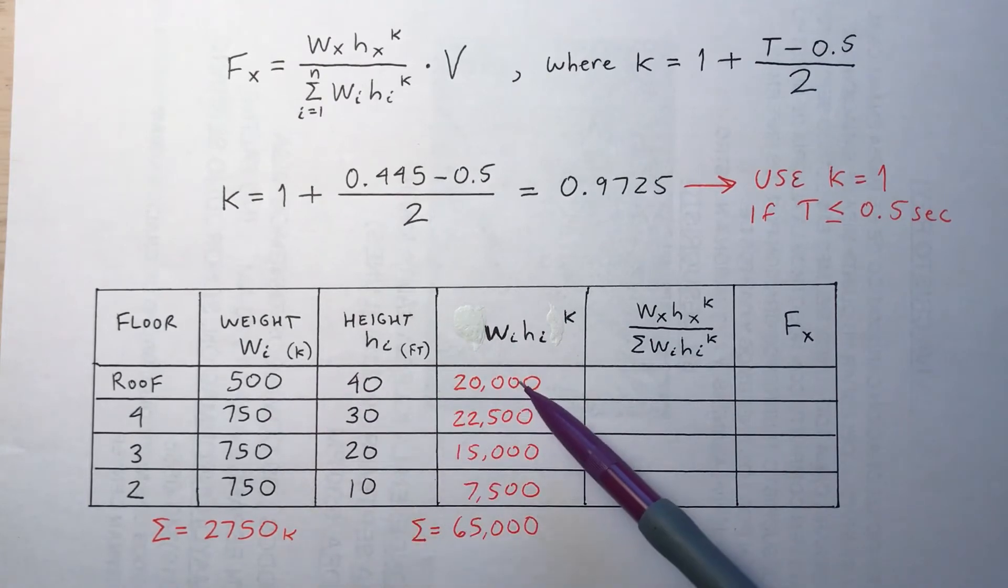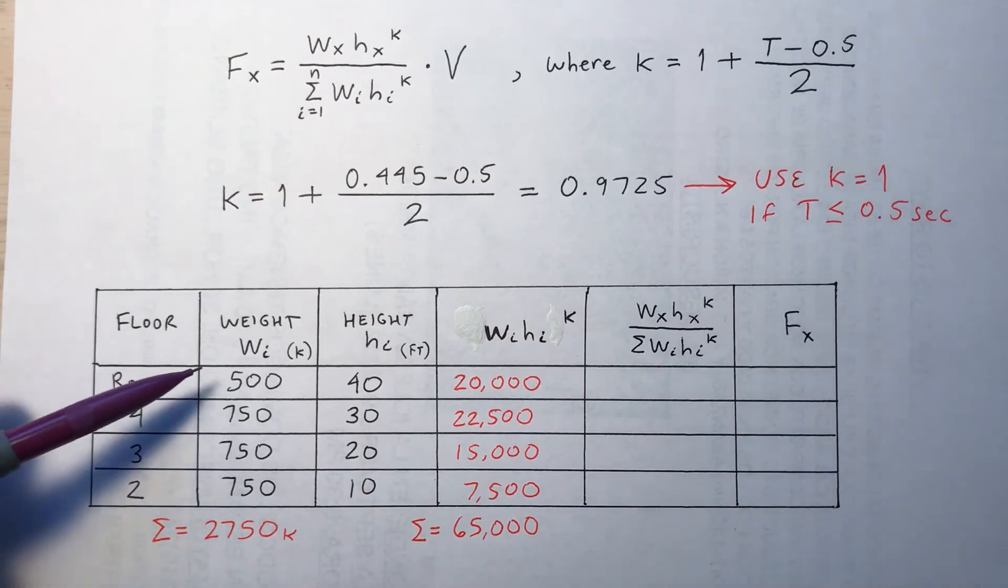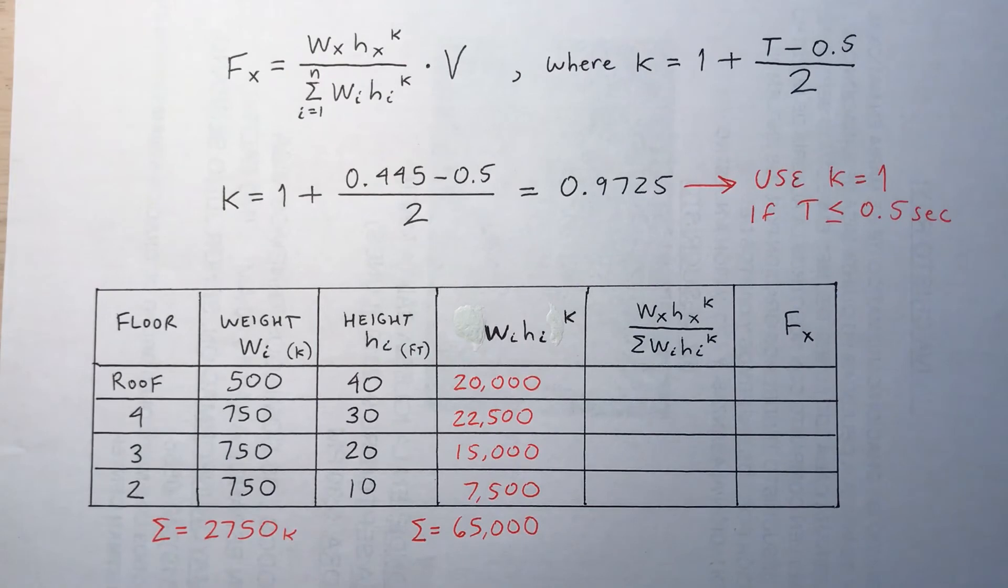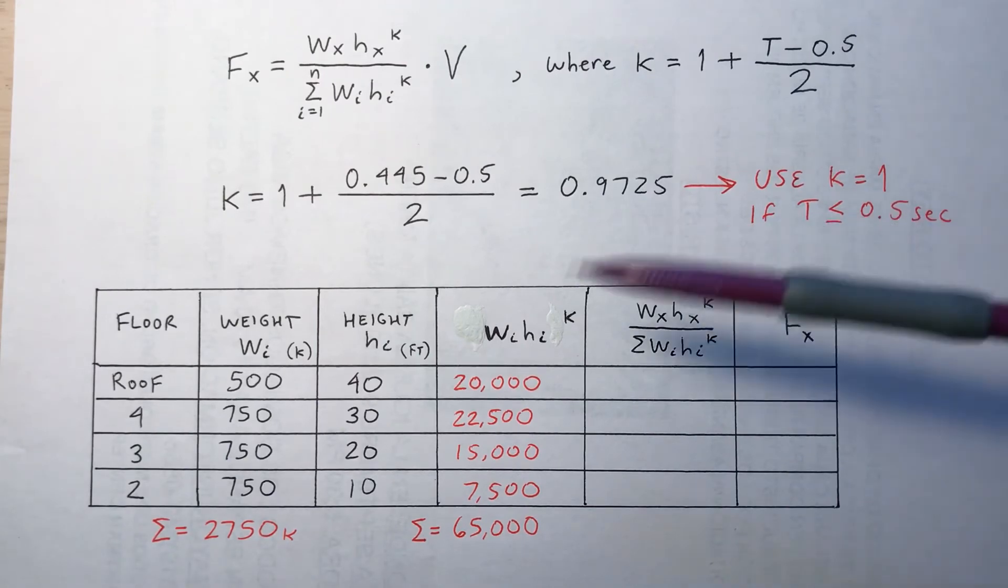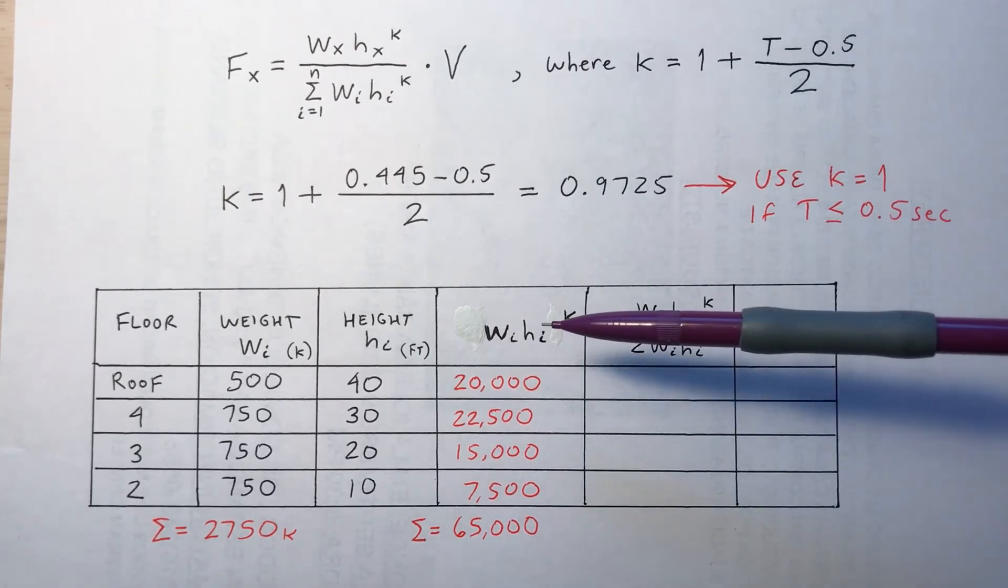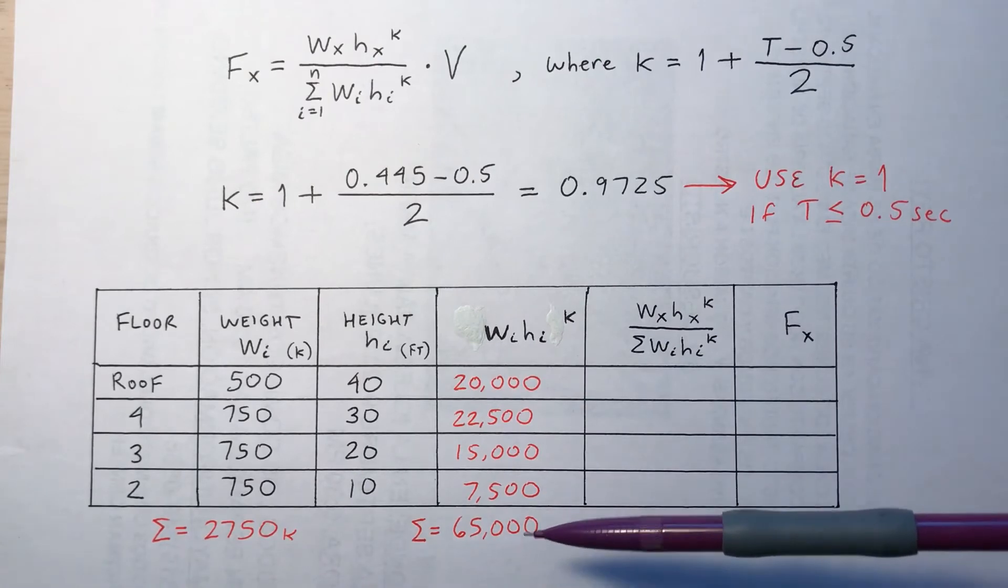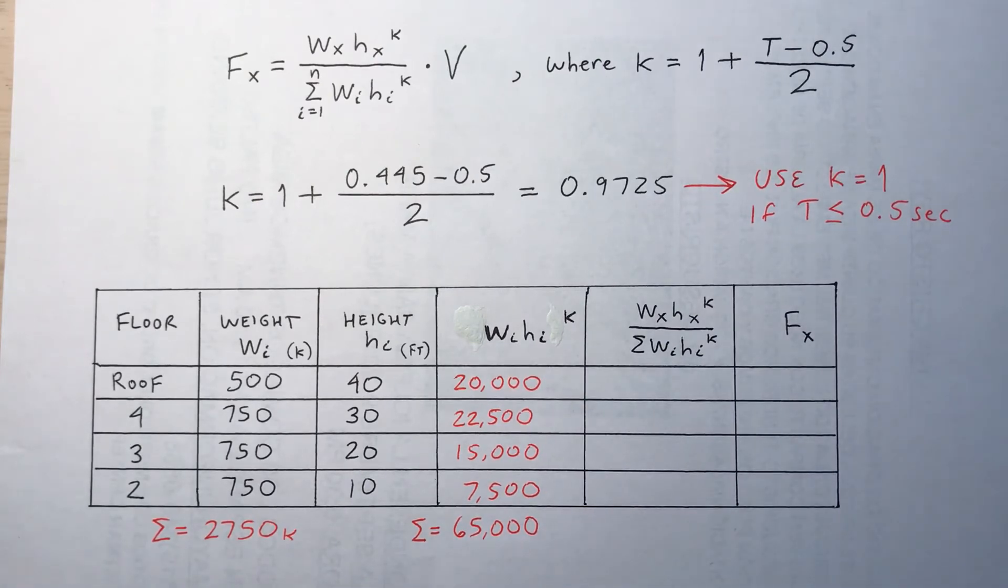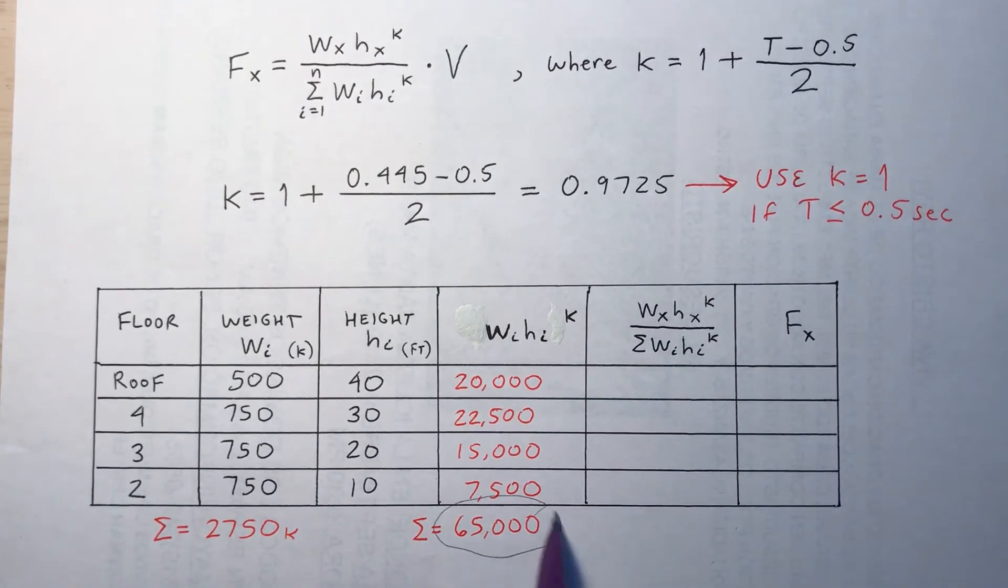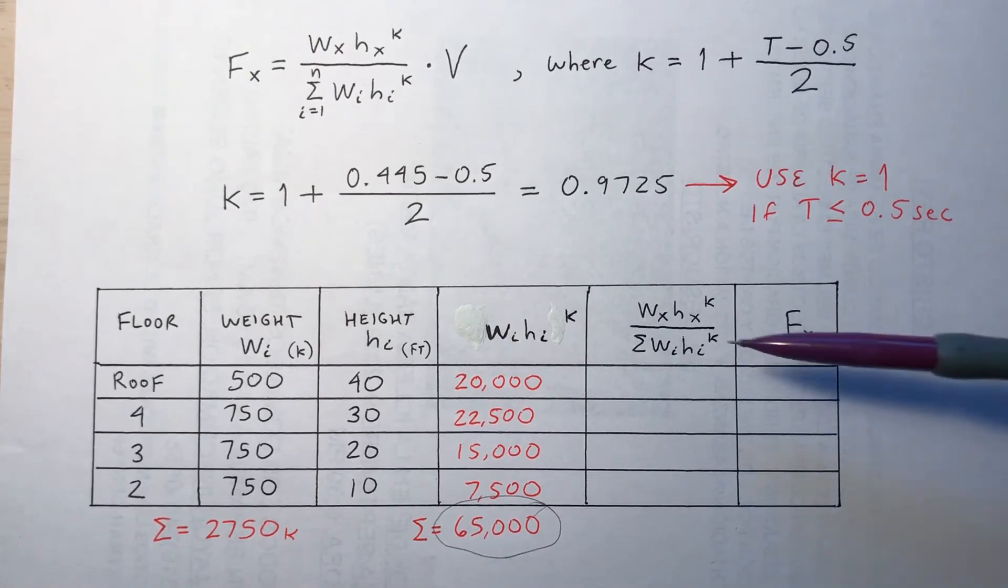And like magic, it gets done. So 500 times 40, 20,000, 750 times 30, 22,500, etc. Add up the weight column. The building weighs 2,750 kips. Add up the W_i, H_i to the k column. 65,000. Remember that number. 65,000 important number.